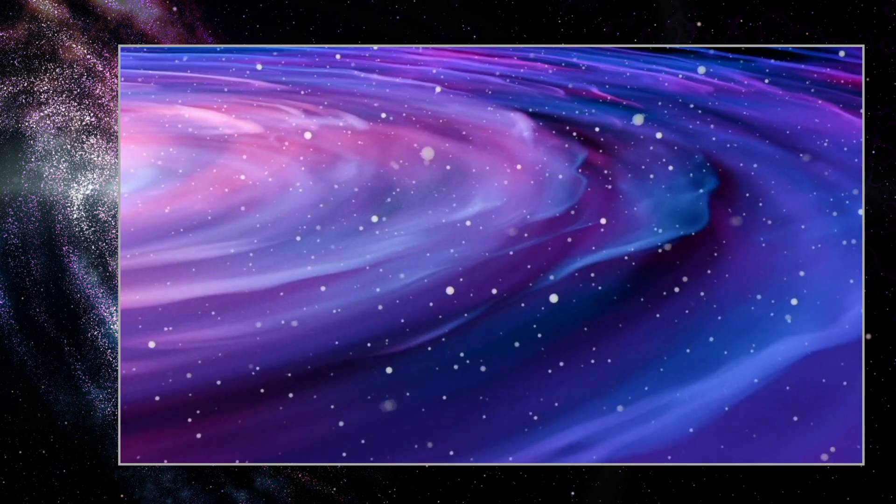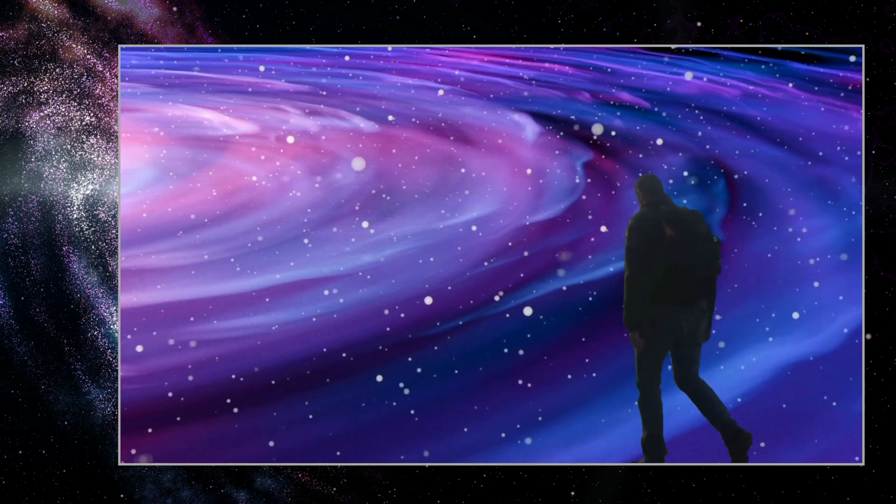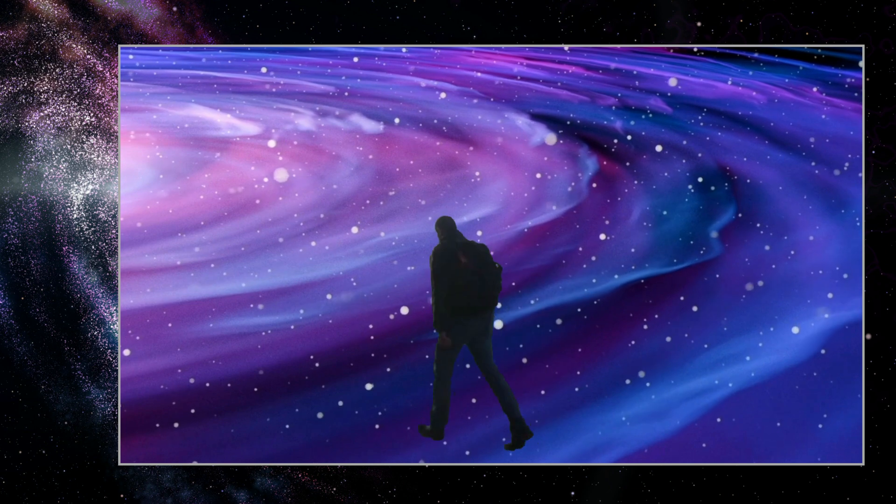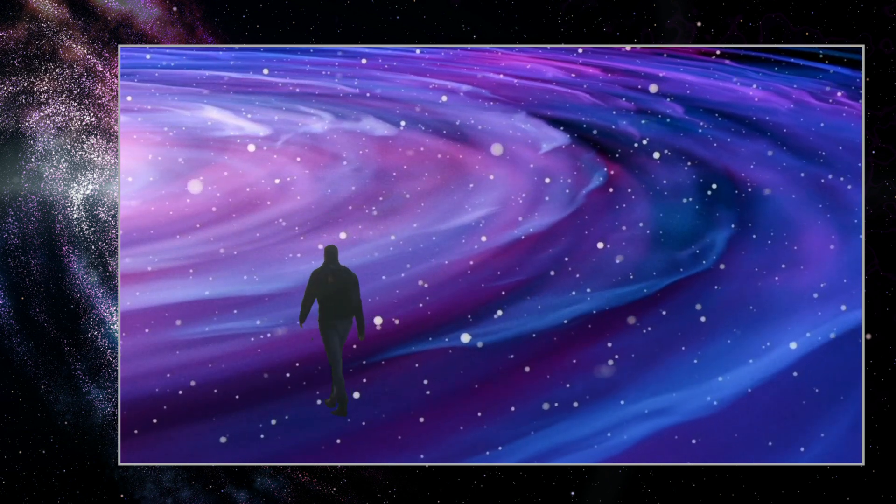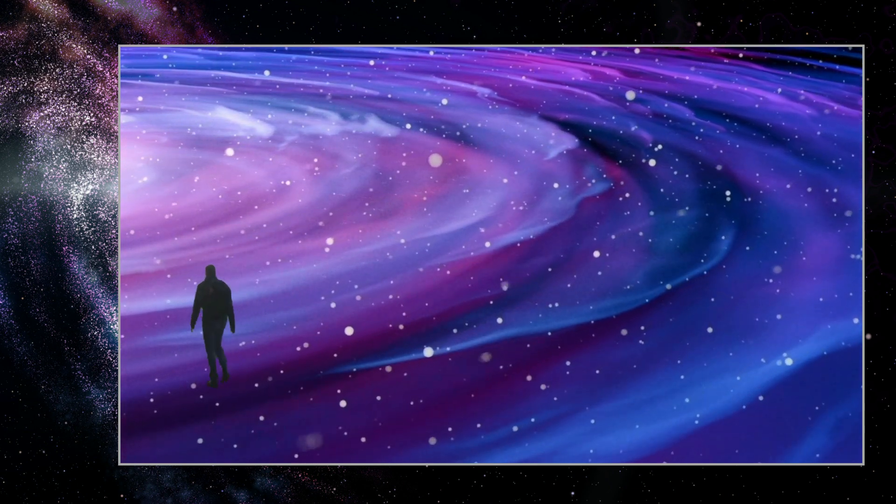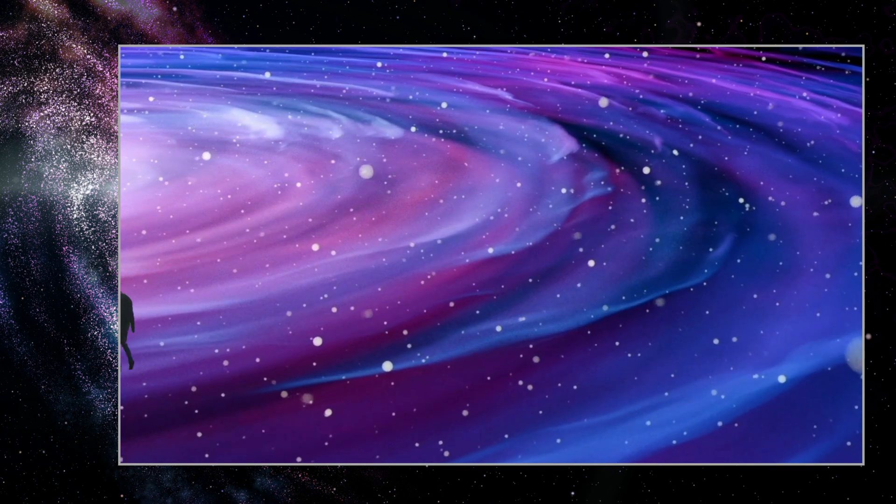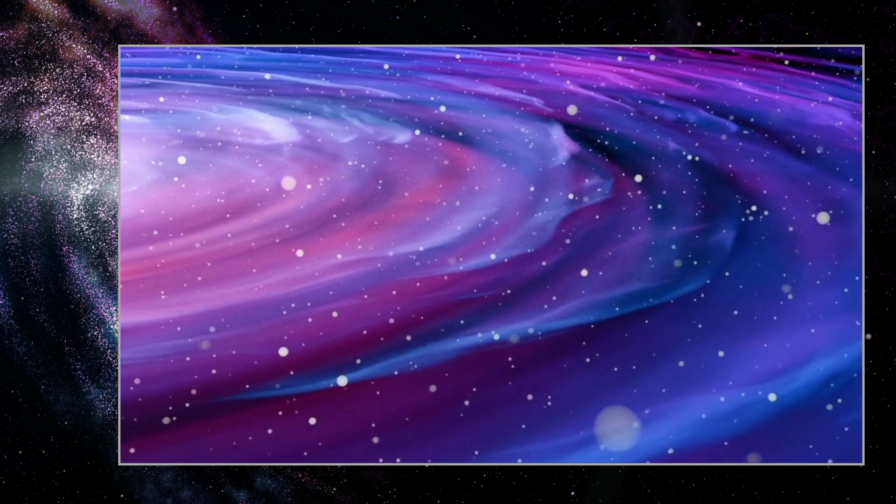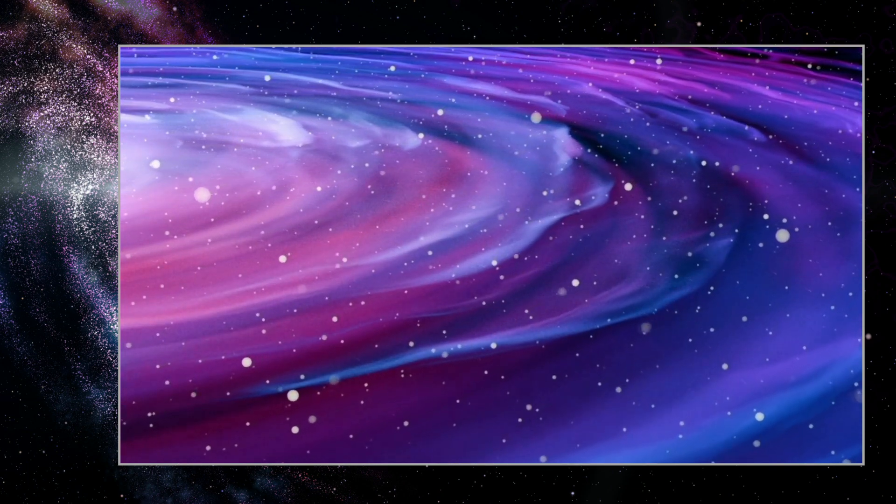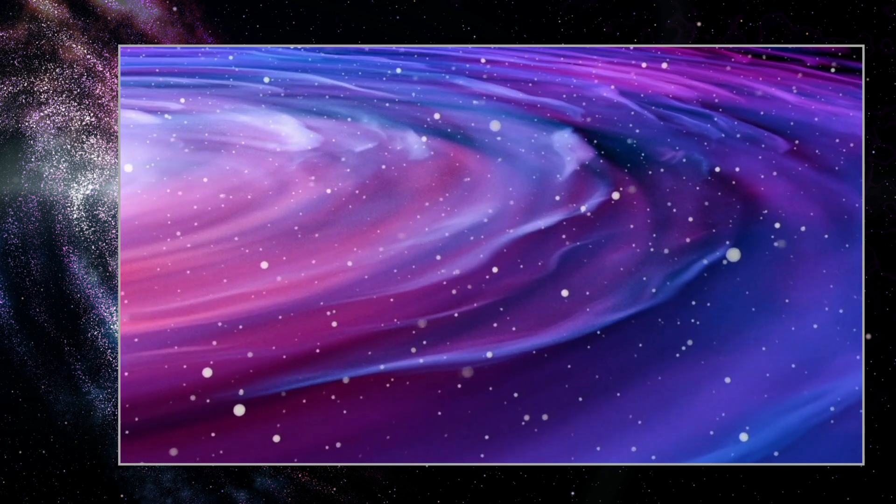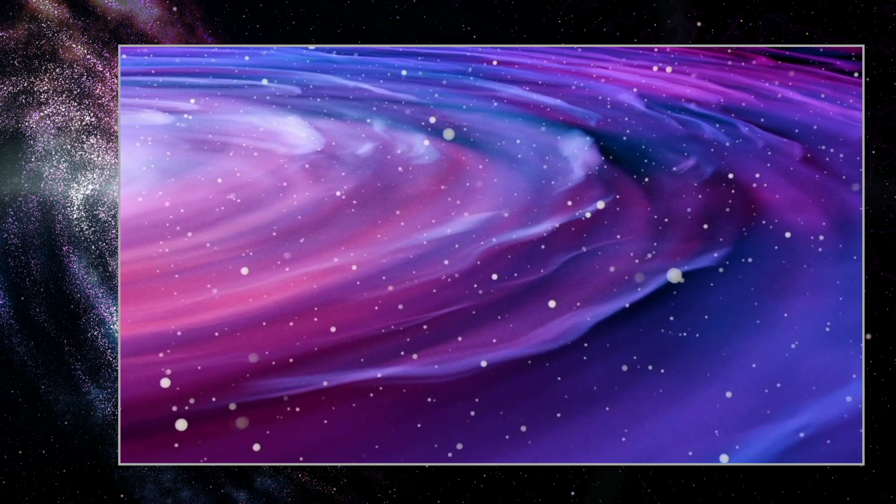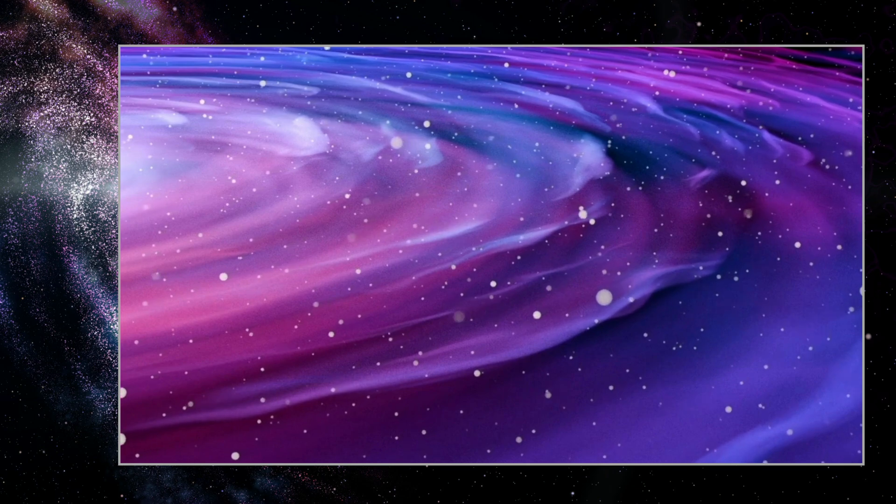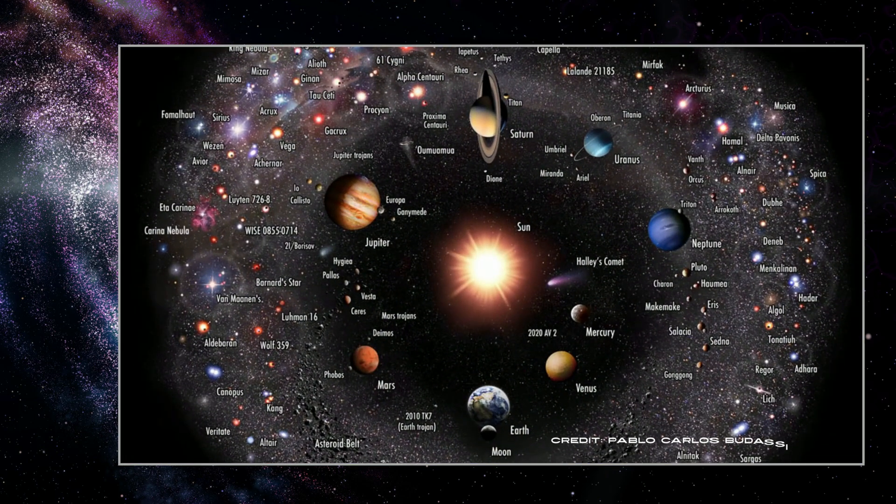You already know that the universe is enormous. But how enormous is it exactly? The observable universe is the part of the cosmos we can see from Earth. More accurately, it is the part that emits or reflects light that reaches our eyes and telescopes. The observable universe is shaped like a sphere with our humble planet at the center.